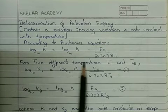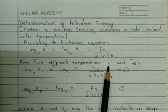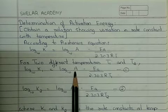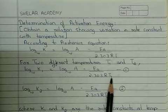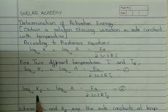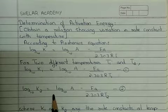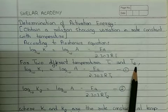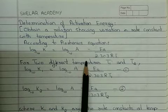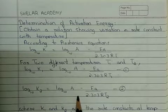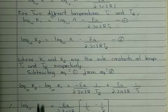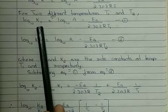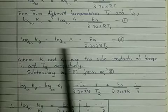For two different temperatures T1 and T2: at temperature T1, the equation is log₁₀ K1 equals log₁₀ A minus Ea upon 2.303RT1. At temperature T2, the equation is log₁₀ K2 equals log₁₀ A minus Ea upon 2.303RT2. At two different temperatures the rate constant varies, but since the reaction is the same, the pre-exponential factor is the same. We write these as equation 1 and equation 2, where K1 is the rate constant at T1 and K2 is the rate constant at T2.